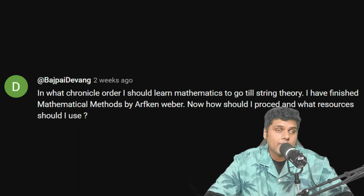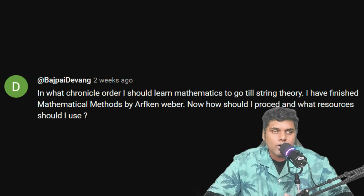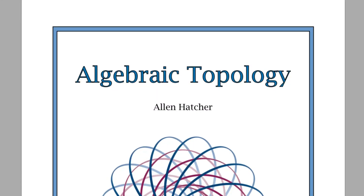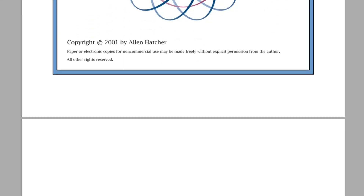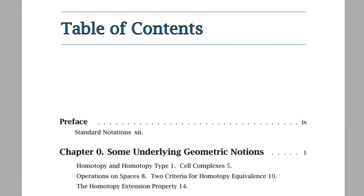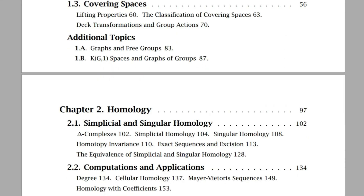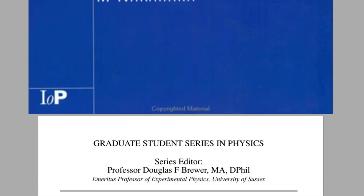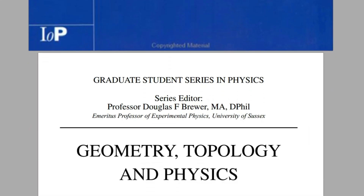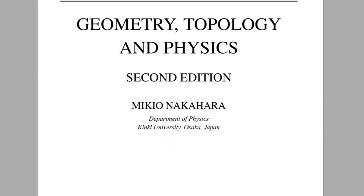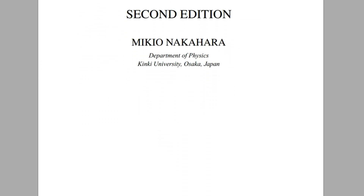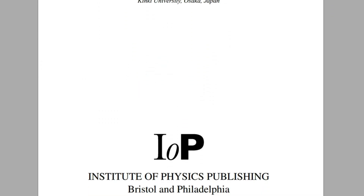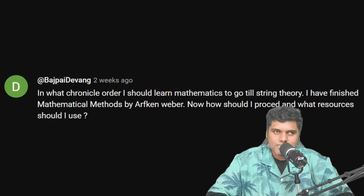There are some places in string theory where you'll need mathematical results from algebraic topology. A good resource is Hatcher's book on algebraic topology. If you want something lighter than Hatcher, I recommend Nakahara's book, Geometry, Topology and Physics. I would say Nakahara is for graduate-level theoretical physics what Arfken, Weber and Harris is for undergraduate-level physics.